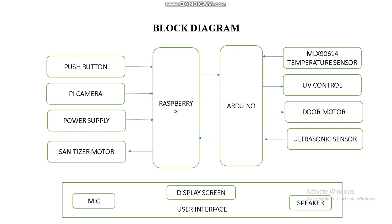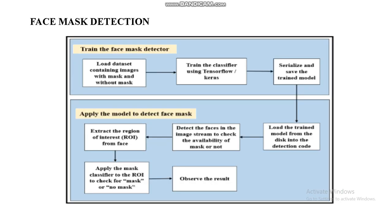After that, we collect the person's data through a microphone and speaker, and those conversations are displayed on the display screen. After that, UV control is activated, and then the door motor opens to sanitize the entire room.